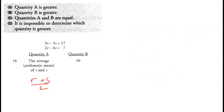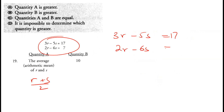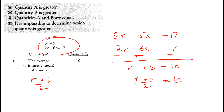Question 19: 3r minus 5s equals 17 and 2r minus 6s equals 7. Find the average of r and s. Subtracting the equations gives r plus s equals 10, so the average is 10 divided by 2, which is 5. Since quantity B is 10 and quantity A is 5, quantity B is greater. Option B is correct.